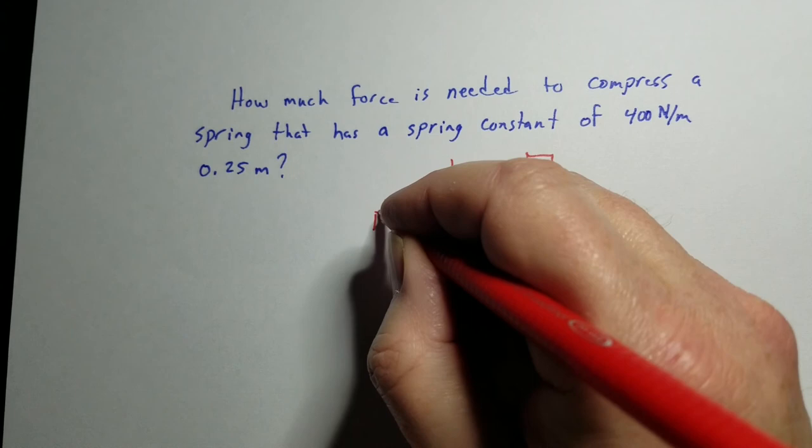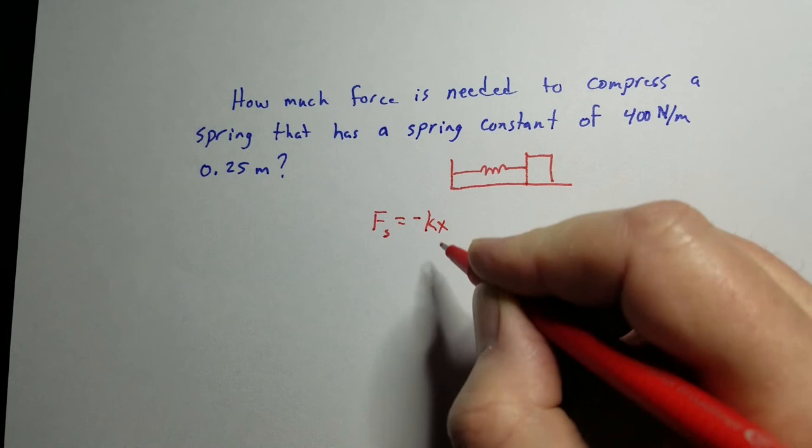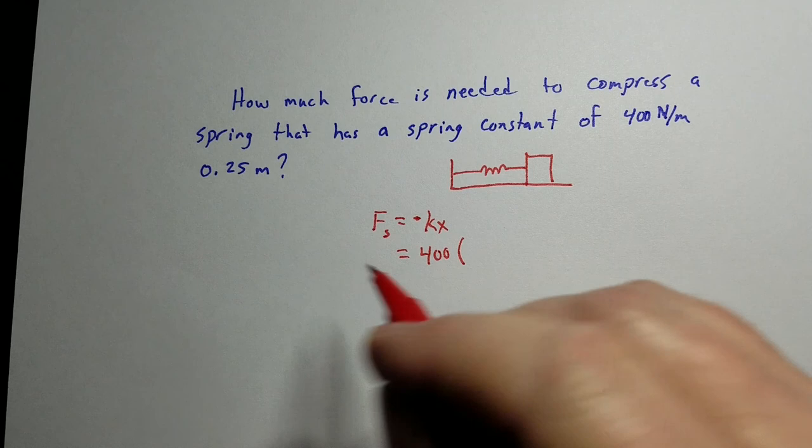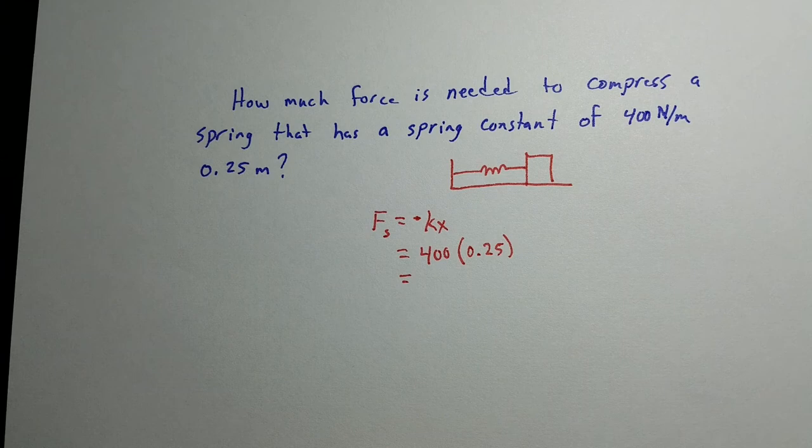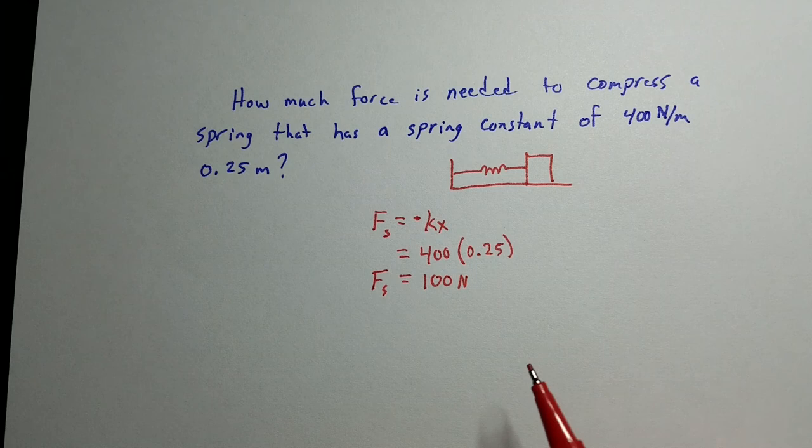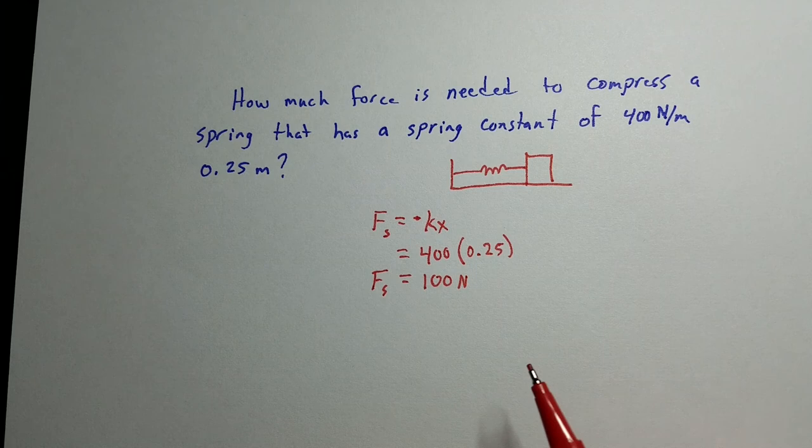Well, F from a spring equals minus kx. This is another reason why that minus sign is not really necessary. But, we have the spring constant is 400 newtons per meter, and we compressed it 25 centimeters, or 0.25 meters. 400 times 0.25, and we get that that would have taken 100 newtons of force to compress that spring that amount.